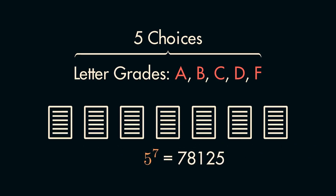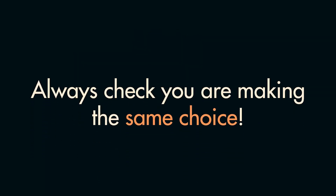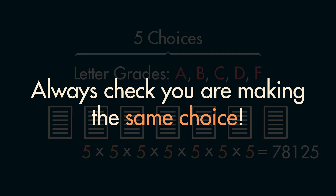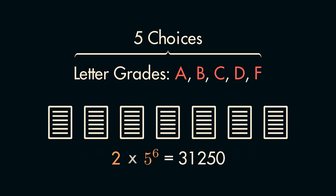One note I'll make is that it's always important to actually check that you're making the exact same choice each time. For example, if you as a teacher instead wanted to be nicer, and gave whatever test you graded first either an A or a B, then your answer would instead be 2 times 5 to the 6. And while this may seem obvious, it can be easy to miss.